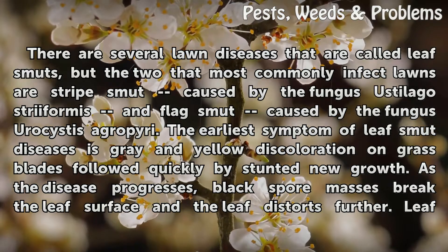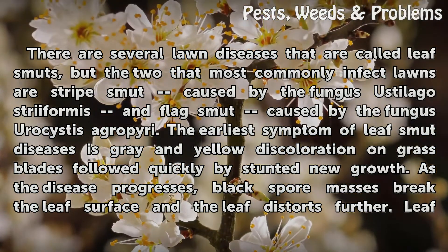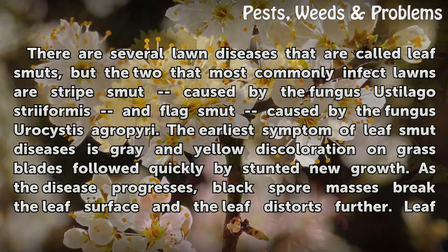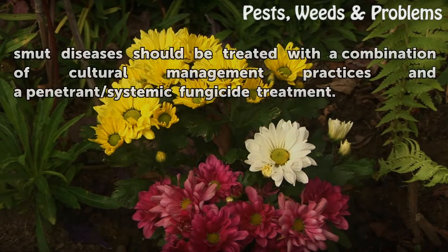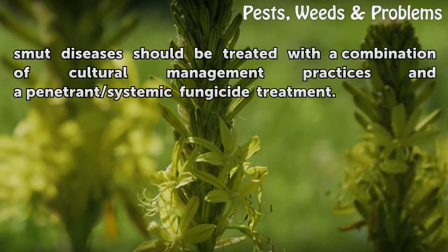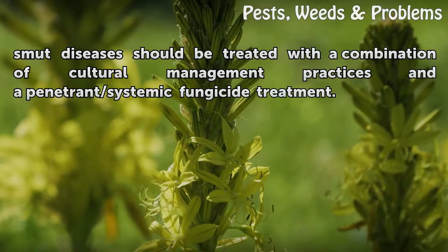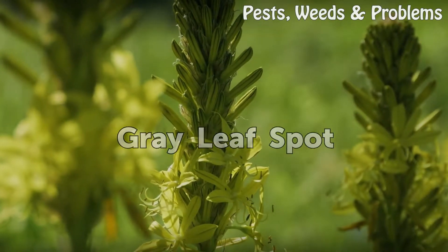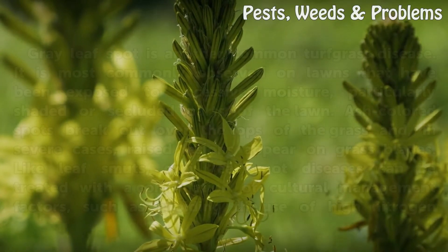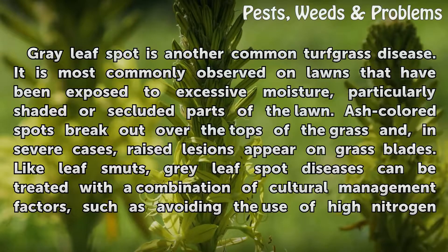There are several lawn diseases called leaf smuts, but the two that most commonly infect lawns are striped smut, caused by the fungus Ustilago striiformis, and flag smut, caused by the fungus Urocystis agropyri. The earliest symptom of leaf smut diseases is gray and yellow discoloration on grass blades, followed quickly by stunted new growth. As the disease progresses, black spore masses break the leaf surface and the leaf distorts further. Leaf smut diseases should be treated with a combination of cultural management practices and a penetrant/systemic fungicide treatment.